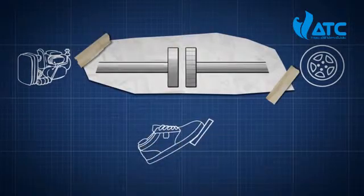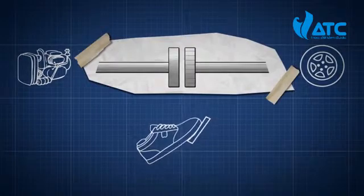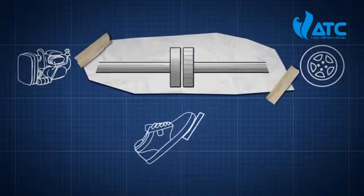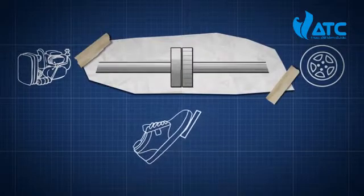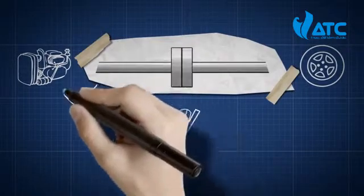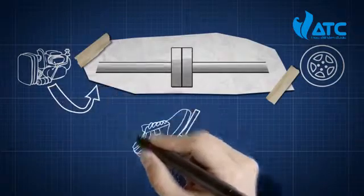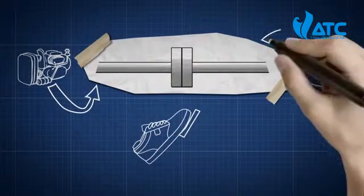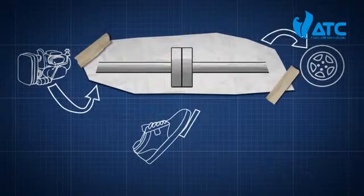When you gradually raise the clutch pedal you're gradually moving the two discs together. The crankshaft goes from the engine to one clutch disc, and the transmission goes from the other clutch disc to the wheels.